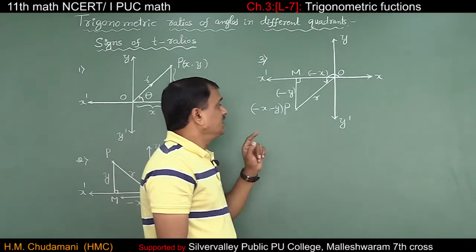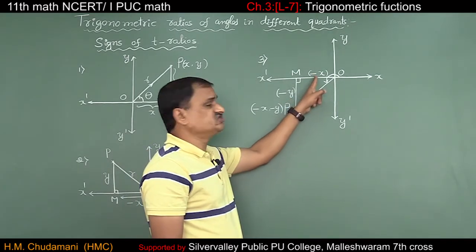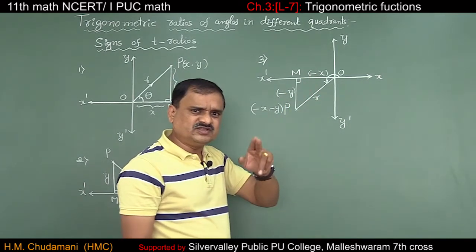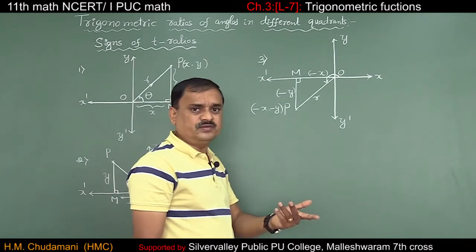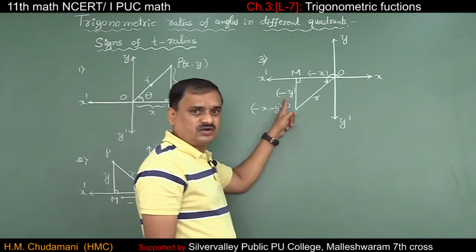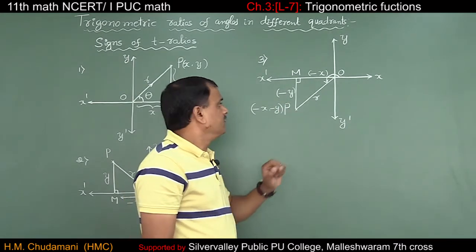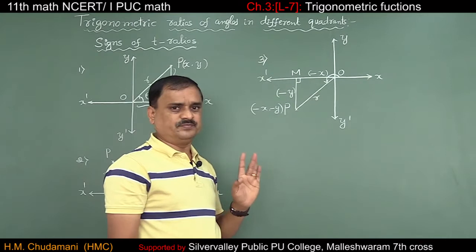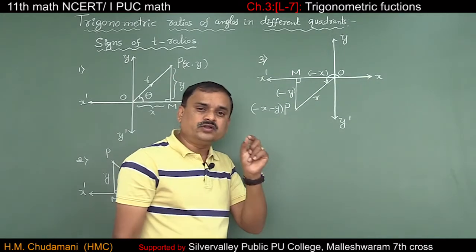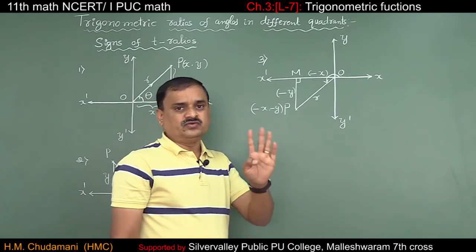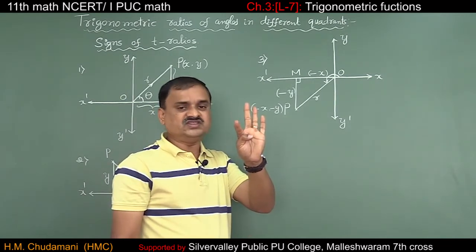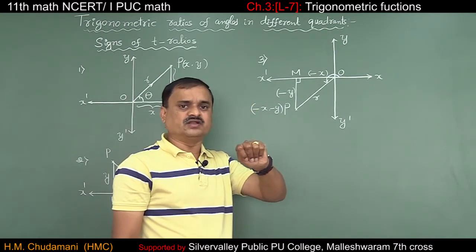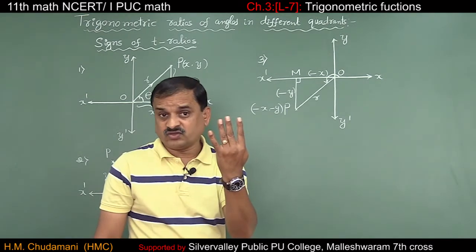So in the third quadrant, only tan θ and cot θ are positive, whereas the remaining four — sin θ, cosecant θ, cos θ, and secant θ — are negative.